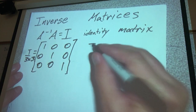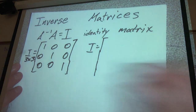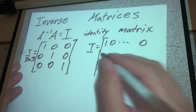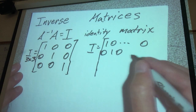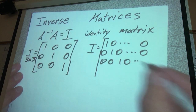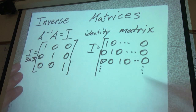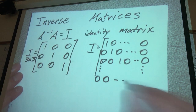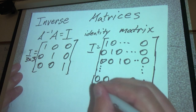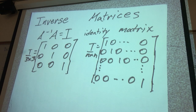And then if we do it in the most general sense, this would be 1, 0, dot dot dot all the way up to 0, then 0, 1, 0, dot dot dot all the way up to 0, and so on down to 0, dot dot dot, 0, 1.